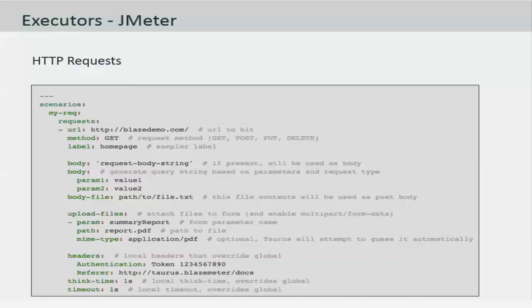Now the base element for a request in a Taurus script is an HTTP request. In its simplest form it contains just the URL as a string. Otherwise it could have elements like the HTTP method, a label, a body, body parameter or the upload file section, or even define the headers section which will create a header manager in the JMX script.